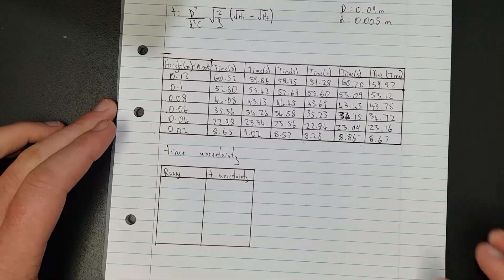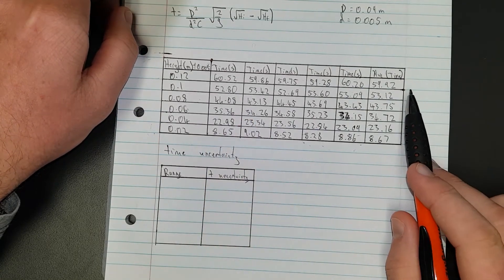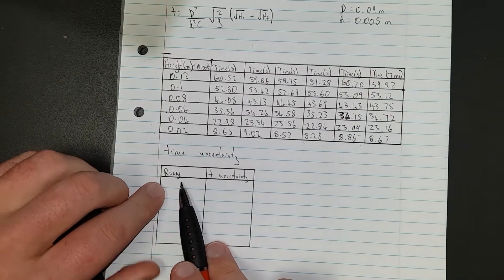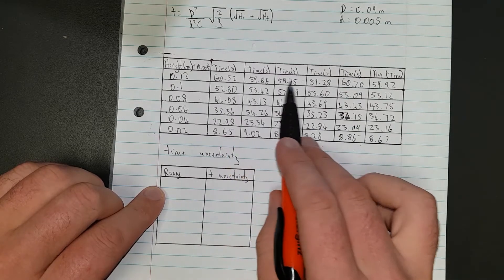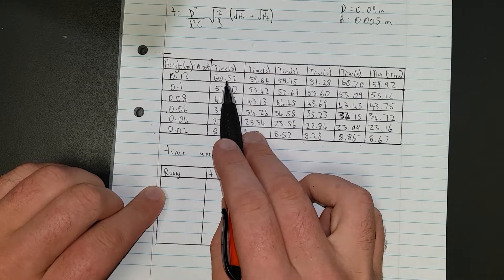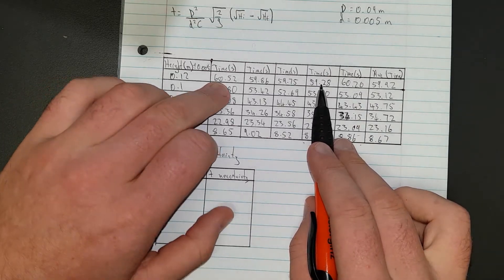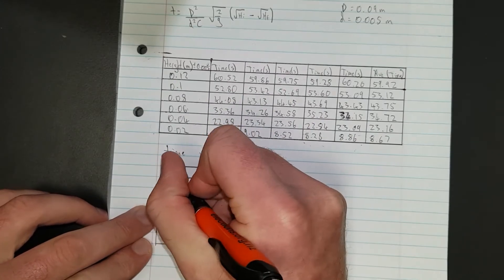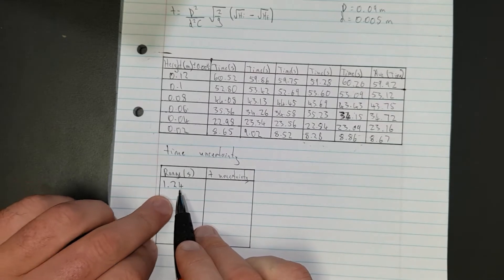I have my height uncertainty here. Now I need to find my time uncertainty. To find your time uncertainty, you find the range. Find the largest number, which is 60.52, and the smallest number, 59.28. So 60.52 minus 59.28 gives you 1.24 seconds. That's the range.